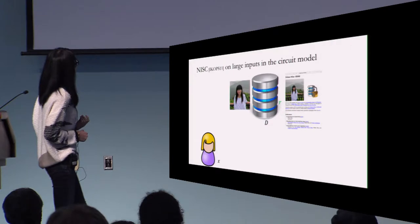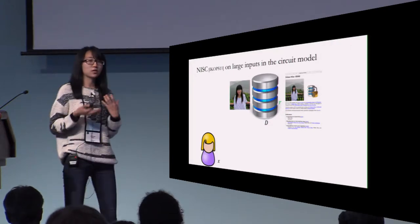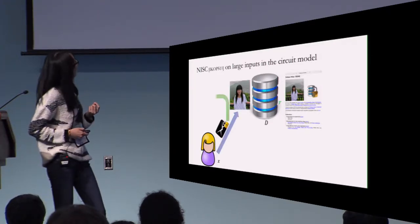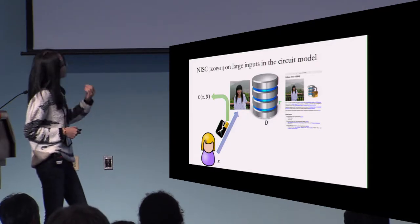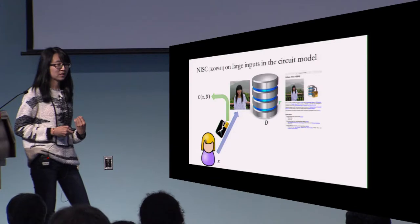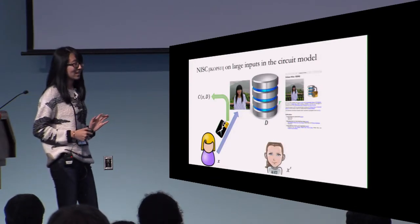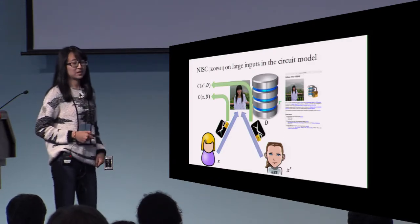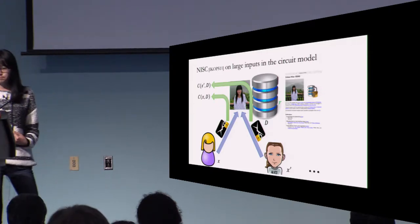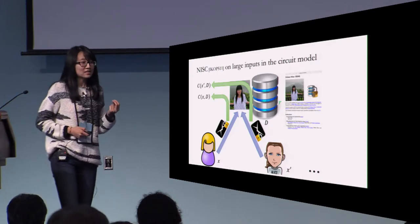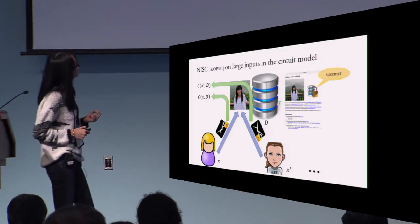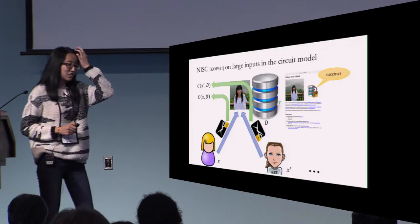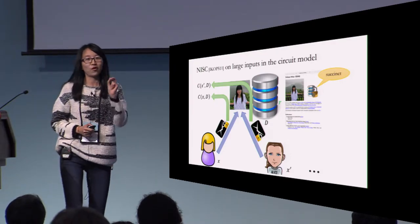Whoever wants to do secure computation with me can do it in a non-interactive way. In particular, a party Alice who has input x can just send me a single message. I can use my database and the randomness r to recover the output C(x, D), and I can do it with any person in the world. The key aspect is that we can make the first message that I published succinct — otherwise I wouldn't be able to put it on my homepage. So succinctness is a very key point in this application.